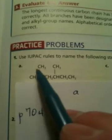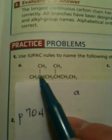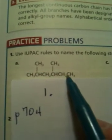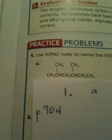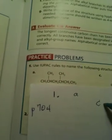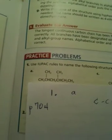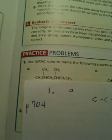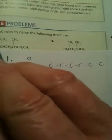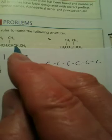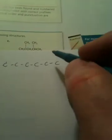This molecule has 1, 2, 3, 4, 5, 6 carbons. So I'm going to write the carbon backbone here — 1, 2, 3, 4, 5, 6. Let me make sure that's right: 1, 2, 3, 4, 5, 6. So I've got 6 carbons in the chain.